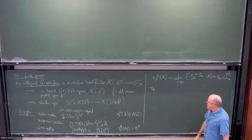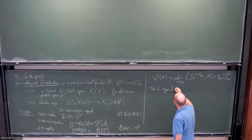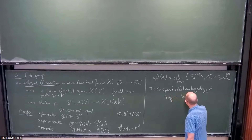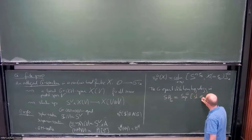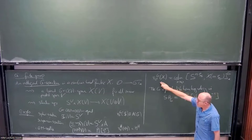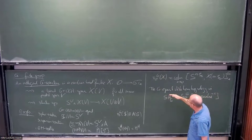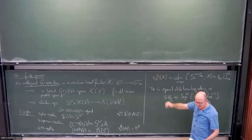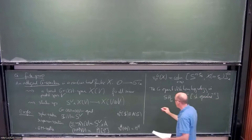Most importantly for this program, the G-equivariant stable homotopy category SHG is the localization of the category of orthogonal G-spectra where we formally invert the stable equivalences. A morphism of orthogonal G-spectra is a stable equivalence if it induces an isomorphism on pi_k^H for all integers k and all subgroups H of G. Then we localize and obtain the equivariant stable homotopy category.